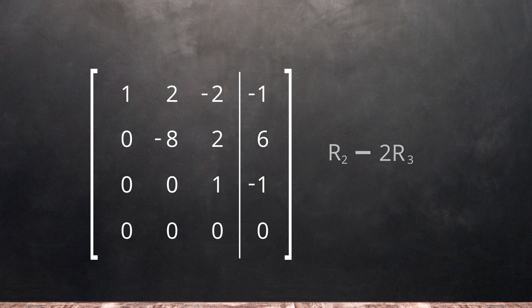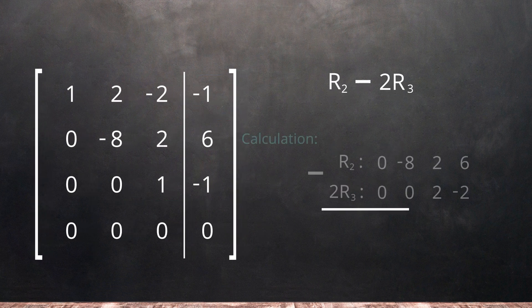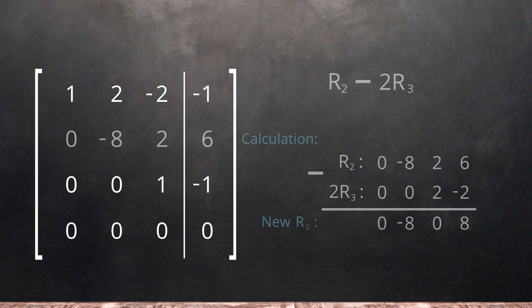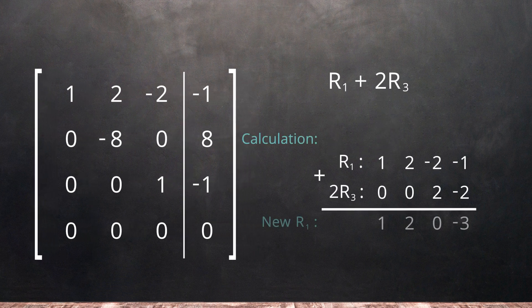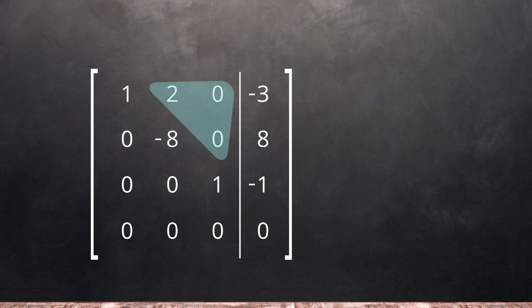Now we can use row 3 as our pivot to change row 1 and row 2. We will change row 2 first by subtracting 2 times row 3 from it. Performing the calculation, we get our new row 2. Now we can change row 1 by adding 2 row 3 to it. Performing the calculations, we get our new row 1 and we almost have an upper triangle of zeros.